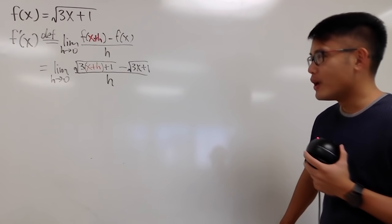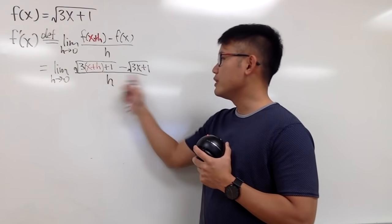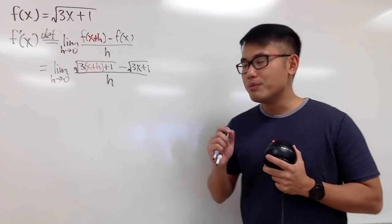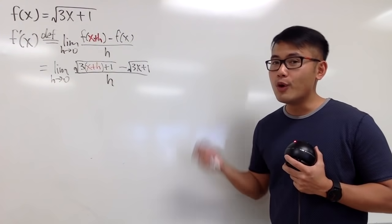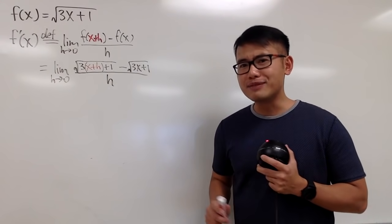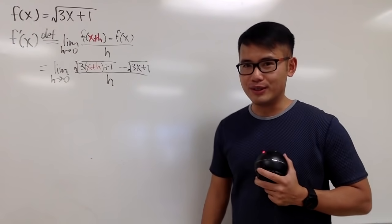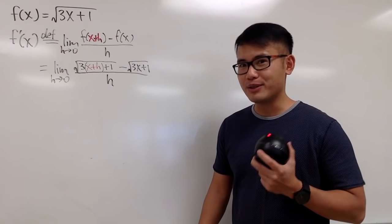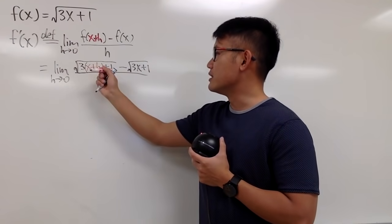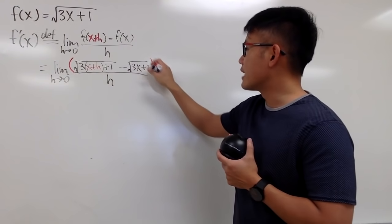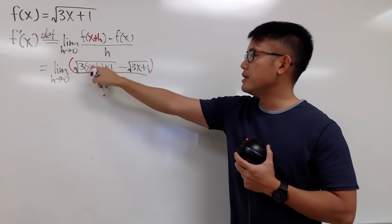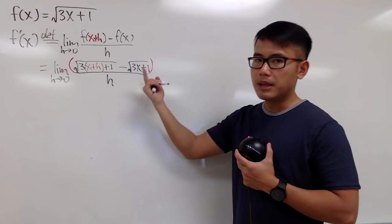What can we do? If you just plug in 0 into all the h's, you end up with a 0 over 0 situation. We must do some algebra and some cancellation will happen. When we have square roots, the best thing to do is use the conjugate. The conjugate means we multiply the top and bottom — instead of minus, we change that to a plus.